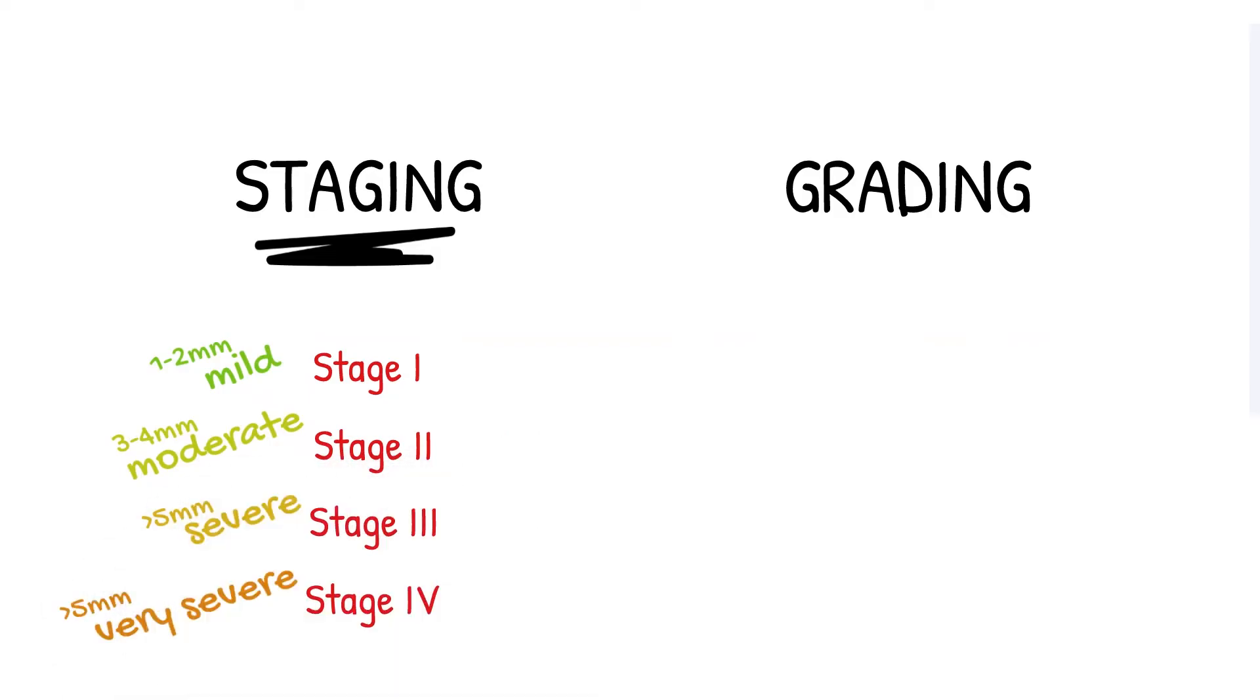Stages one, two, and three are synonymous with mild, moderate, and severe categories of the disease used previously. This was based on clinical attachment loss in millimeters. Stage four represents the most severe form of the disease where other complexity factors may be present, such as vertical bony defects, excessive tooth mobility, and the need for complex rehabilitation due to tooth loss.